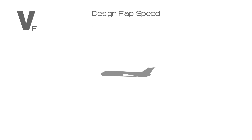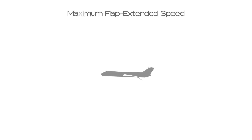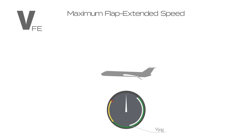Design flap speed is represented by VF. This is the maximum speed for flaps operation and may be the same as VFE. Maximum flap extended speed is represented by VFE. On the airspeed indicator, the top of the white arc indicates this speed — it is the highest speed permissible with flaps in an extended position. Flap retract speed is represented by VFR, which is the minimum speed required for flap retraction after takeoff.